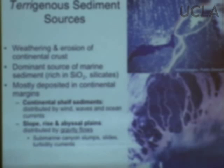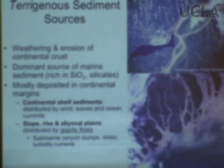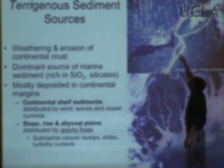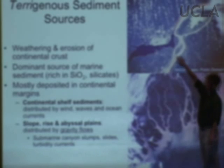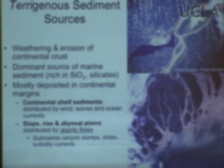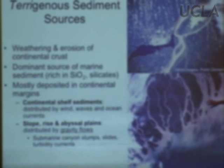We're going to start by talking about terrigenous sediment sources, and then spend quite a bit of time on biogenous sediment sources, which turn out to be really interesting. To give a sense of terrigenous sources: the Amazon River and the Rio Negro near Manaus, Brazil, show all this material being transported from the Andes to the seashore. This is the outlet of the Brahmaputra and Ganges River in Bangladesh, draining the Himalayan mountains — all this brown terrigenous sedimentary material being delivered to the Bay of Bengal.